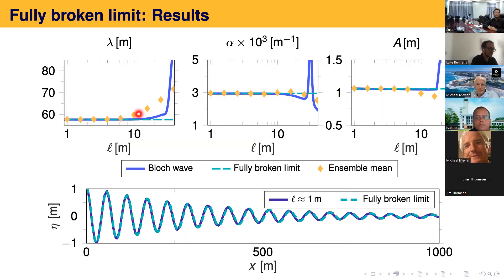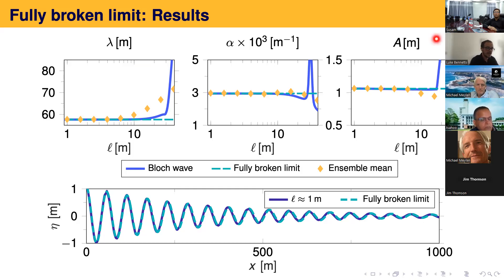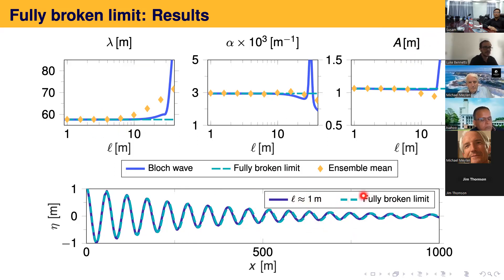Here are the results, focusing on the fully broken regime. This shows the wavelength, attenuation rate, and amplitude. The blue line is the straight Bloch theory and the broken cyan line is the broken limit from the previous analysis. I get really nice agreement: in the fully broken regime I'm picking up the fully broken limit. The blue curve is a direct numerical simulation for a small floe size L equal to one — a randomly generated realization of the ice cover — and reconstructing the wave field with the limiting values gives essentially perfect agreement.